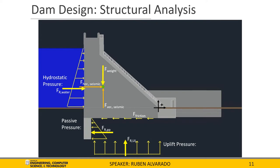Before we get into any calculations, I will briefly explain the forces seen on the cross-section of the dam. The first force is the hydrostatic pressure force, which is the weight of the water that the surface of the dam experiences with respect to depth. The next force is the passive earth pressure force, which is the weight of the soil that the shear key experiences to help stabilize the structure. Then we have the weight of the dam, which generates the friction force, assisting the dam in preventing sliding. The last force is the uplift pressure, created due to the seepage of the water being stored. The horizontal and vertical seismic forces are inactive unless there is a sudden ground acceleration.